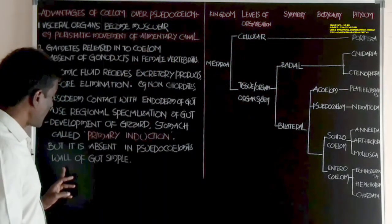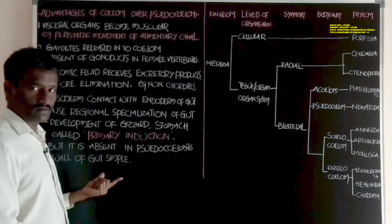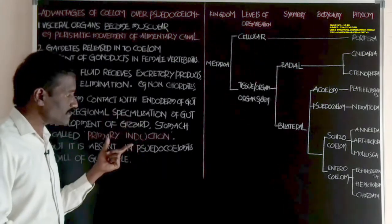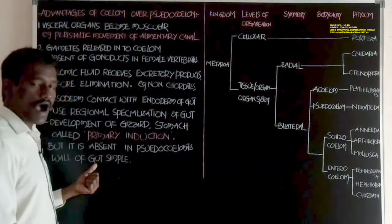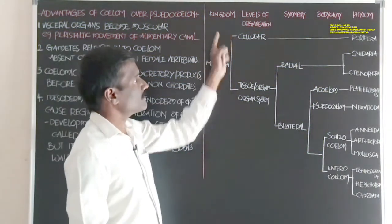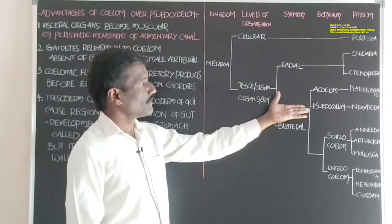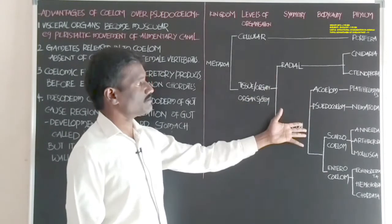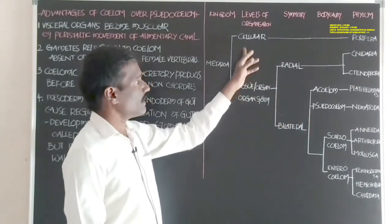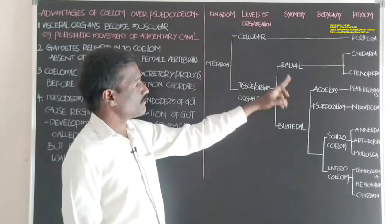These are all the advantages present in animals which show true coelom, and these are absent in animals which show pseudo-coelom. In pseudocoelomates, the gut wall is very simple. Such type of complexity in the food tube is absent. This is the differentiation of animals which show different types of coelom, different types of symmetry, and different types of levels of organization — presented in a table-like arrangement.